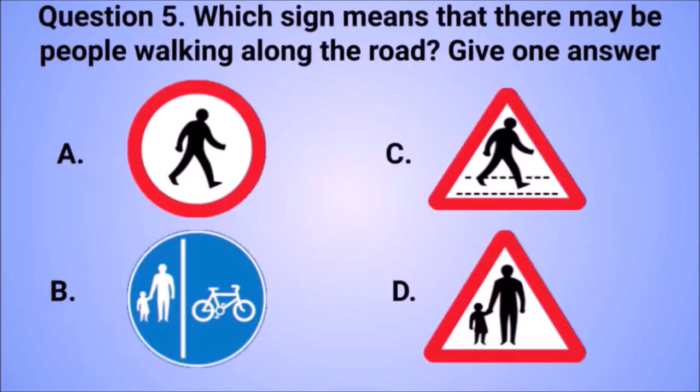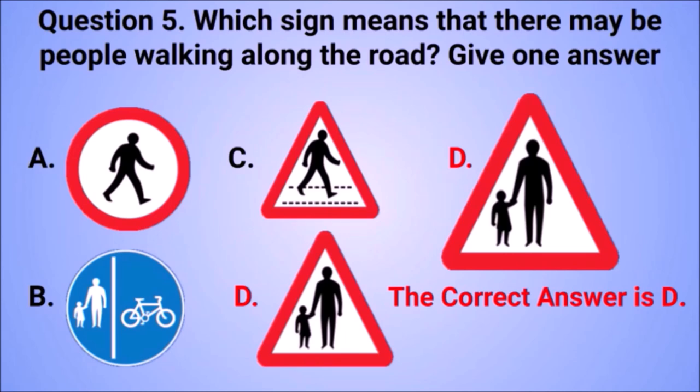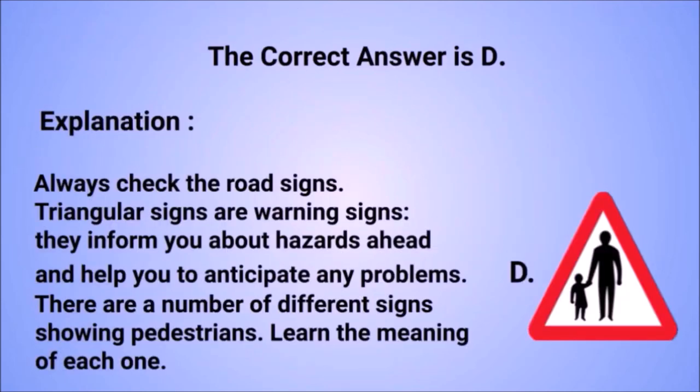Question 5. Which sign means that there may be people walking along the road? The correct answer is D. Always check the road signs. Triangular signs are warning signs; they inform you about hazards ahead and help you to anticipate any problems. There are a number of different signs showing pedestrians — learn the meaning of each one.